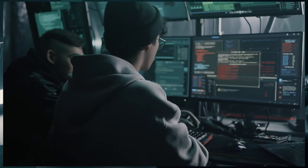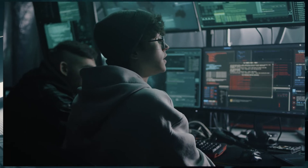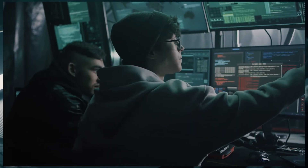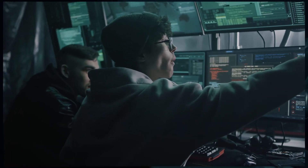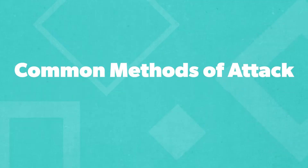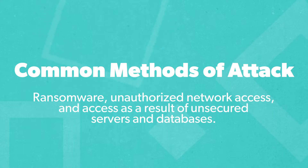That's according to Black Kite's 2022 third-party breach report. The most common methods of attack were ransomware, unauthorized network access, and access as a result of unsecured servers and databases.